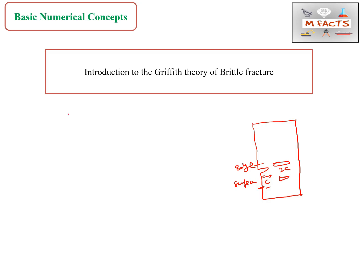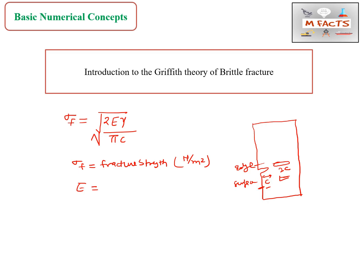The formula of Griffith Theory is: sigma F equals the square root of (2E gamma divided by pi C). Sigma F is the fracture strength with units of Newton per meter square. E is the elastic modulus, also in Newton per meter square. Gamma is the surface energy, and this theory is related to stored strain energy. The unit for surface energy is Joule per meter square.